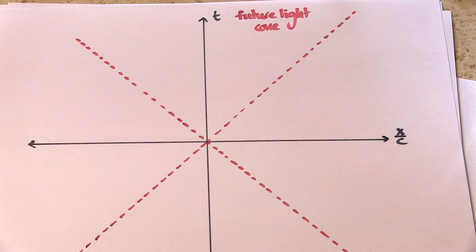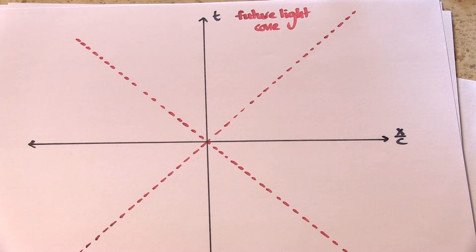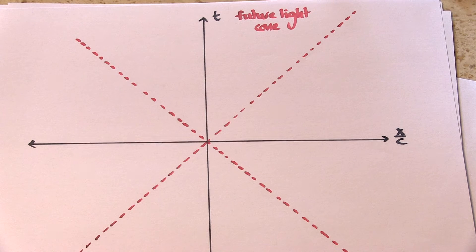They travel along 45 degree lines, the dotted red ones, and they divide the space up into four quadrants. Everything that I do in the future takes place in the topmost quadrant. It's called the future light cone and I can't escape from it.